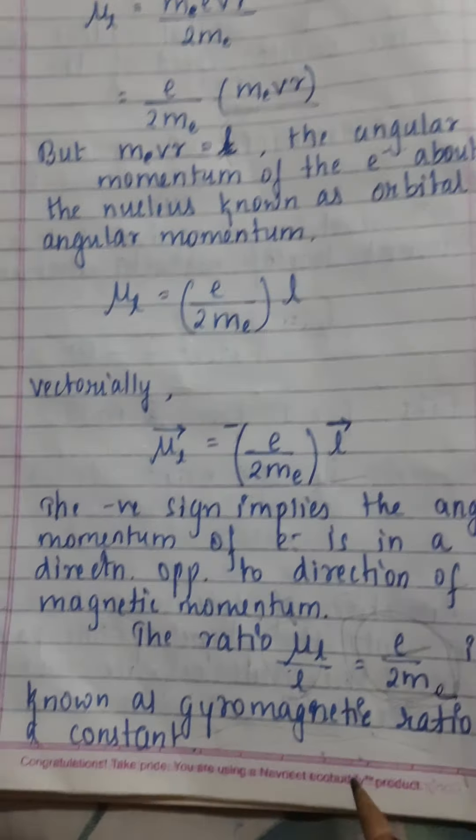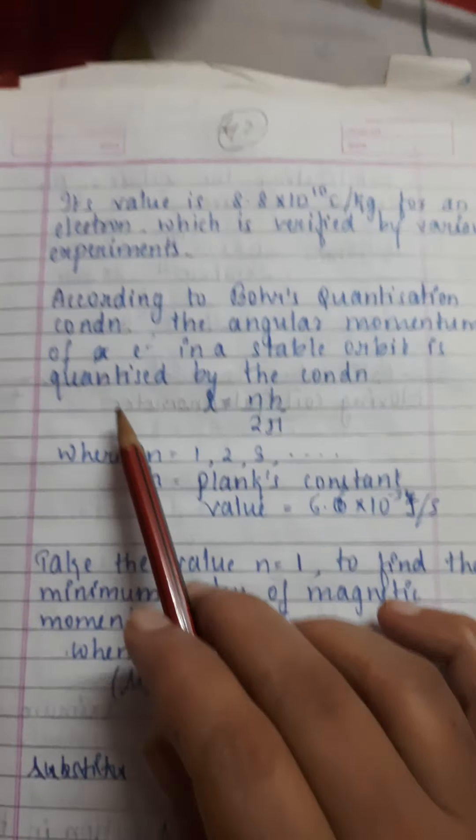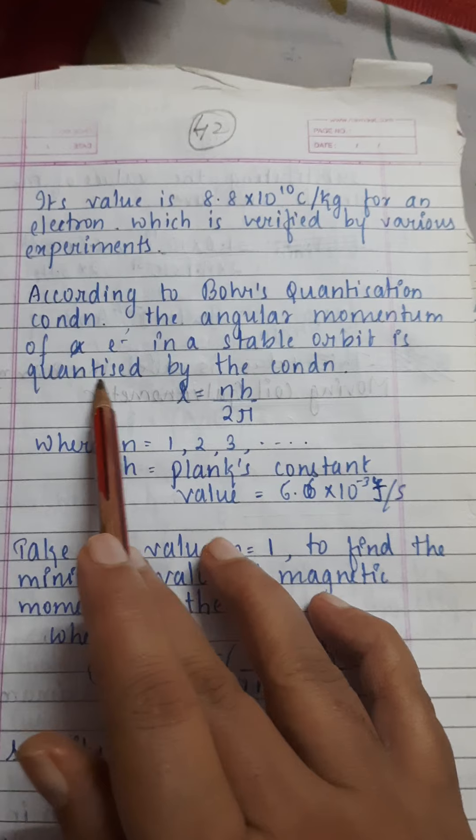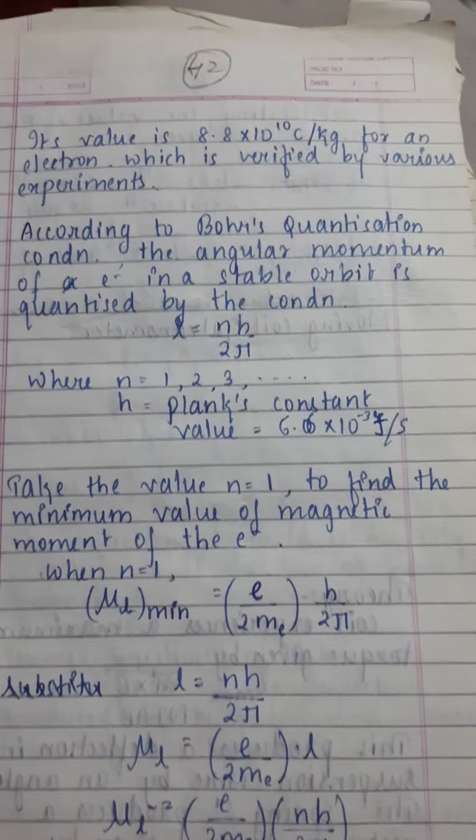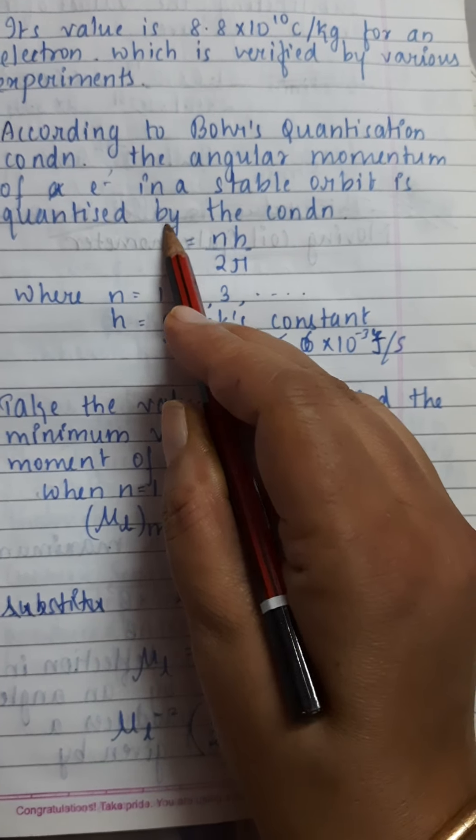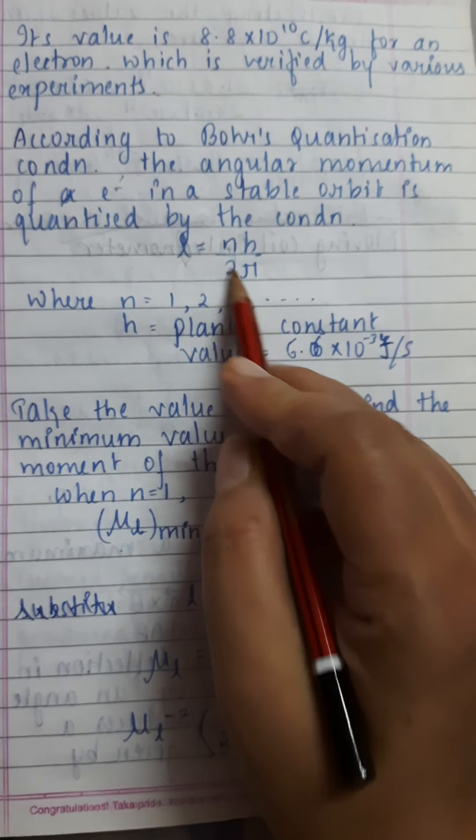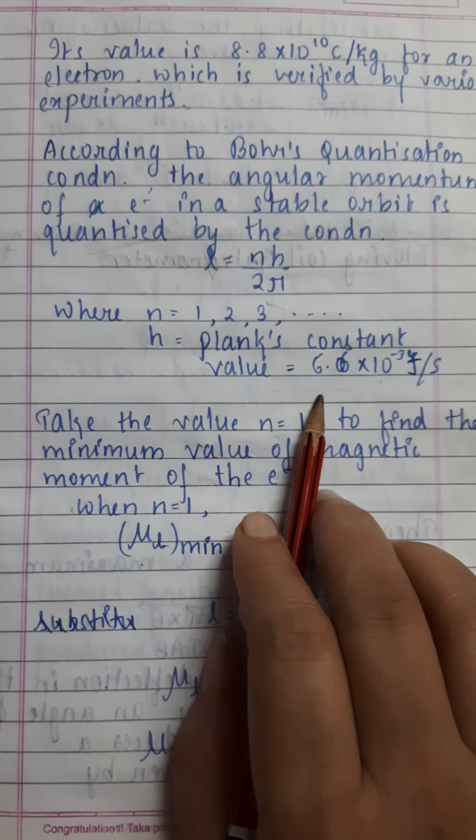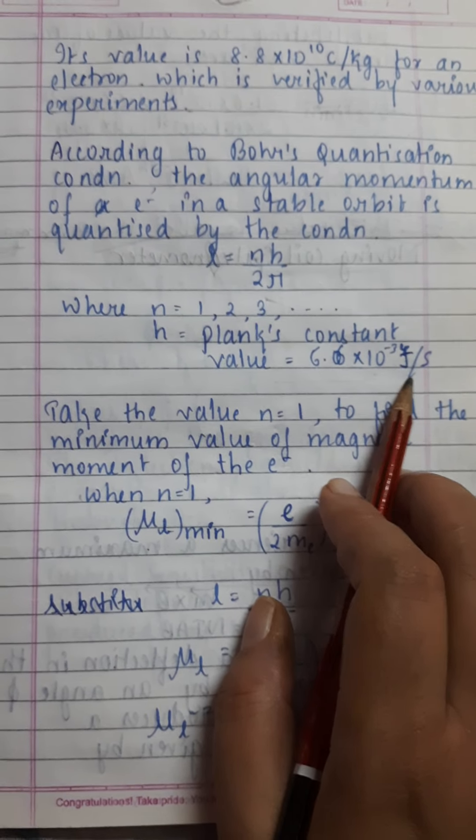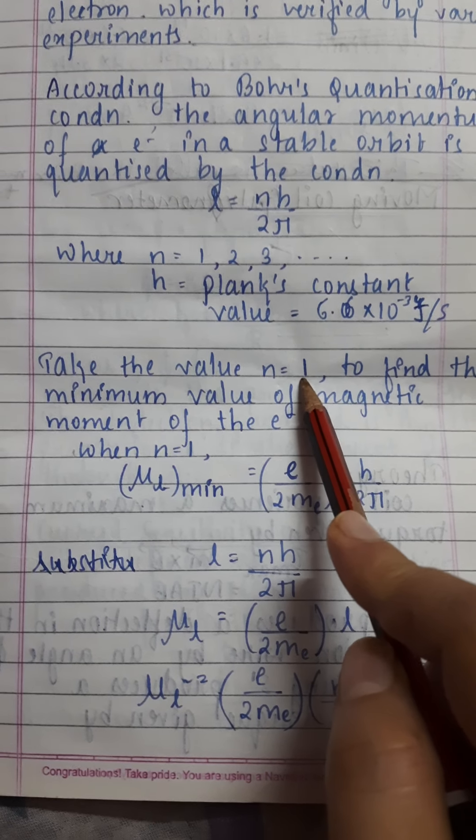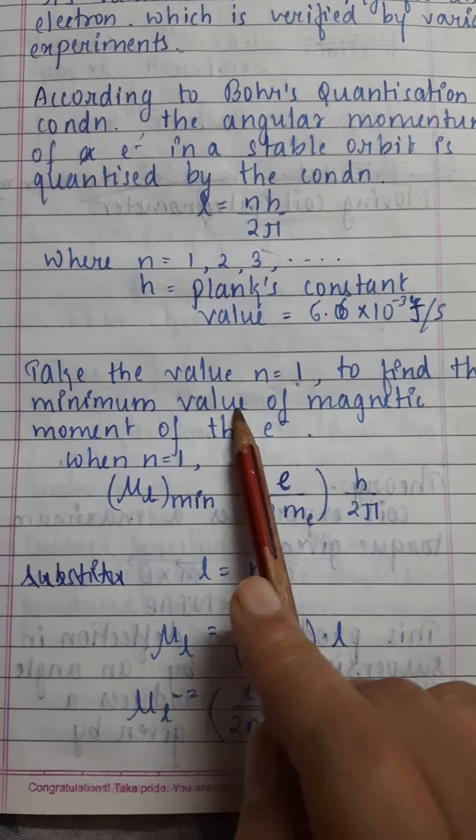According to Bohr's quantization condition, the angular momentum of e in a stable orbit is quantized. Bohr's quantization formula is L equals nh/(2π), where n equals 1, 2, 3. h is Planck's constant with value 6.6×10^-34 joule per second. For n equals 1, we get the minimum value of magnetic moment.